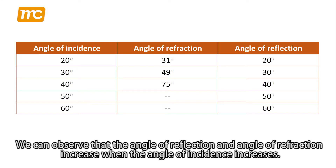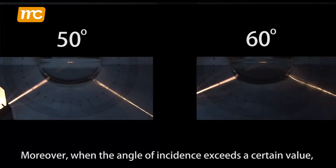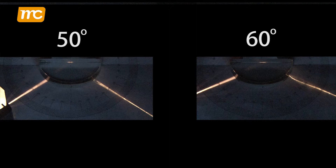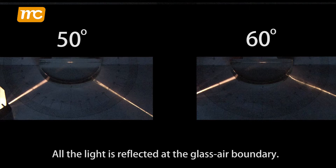We can observe that the angle of reflection and the angle of refraction increase when the angle of incidence increases. Moreover, when the angle of incidence exceeds a certain value, no refracted ray can be observed. All the light is reflected at the glass-air boundary.